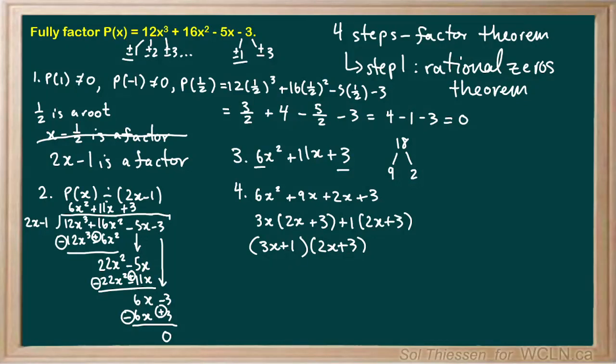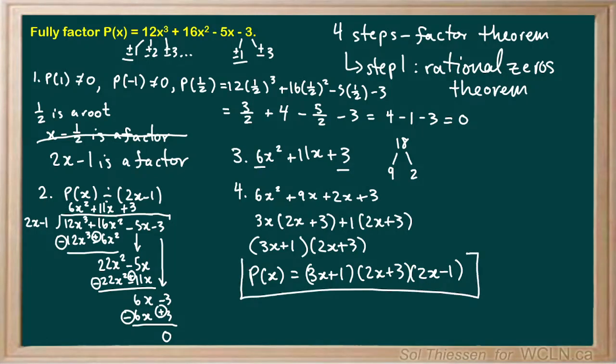So now we factored the quadratic. We figured out this other factor earlier. So we can rewrite our original polynomial P of x as the product of these three factors that we found. It's 3x plus 1 times 2x plus 3 times 2x minus 1. So this is about as tough as one of these examples could possibly get. So if you can do this, you can do any factoring example.